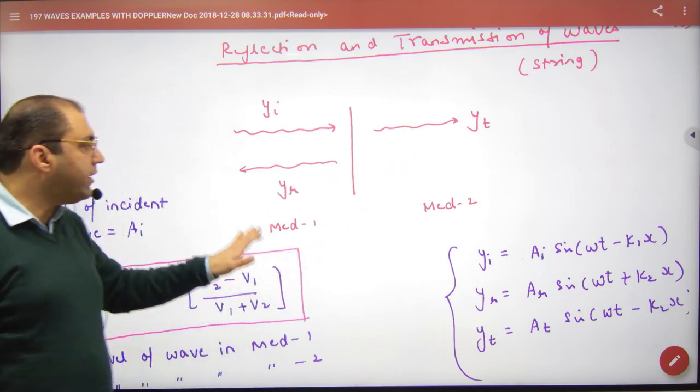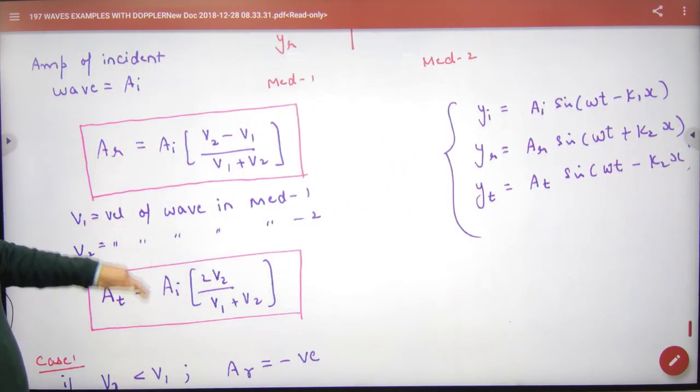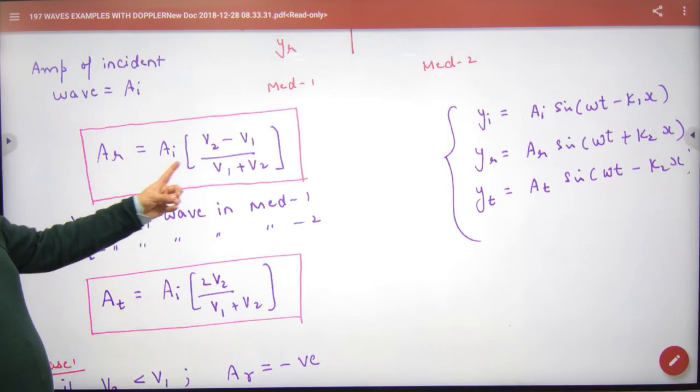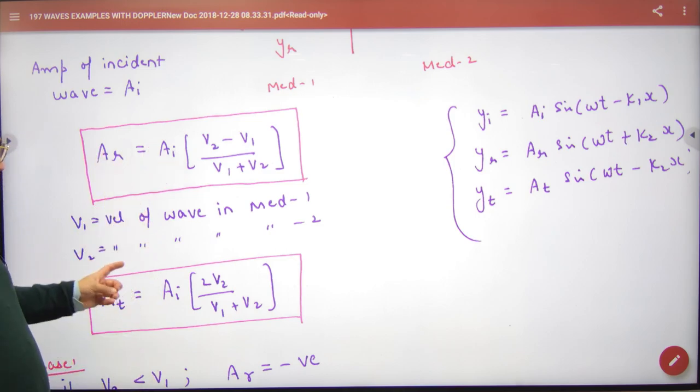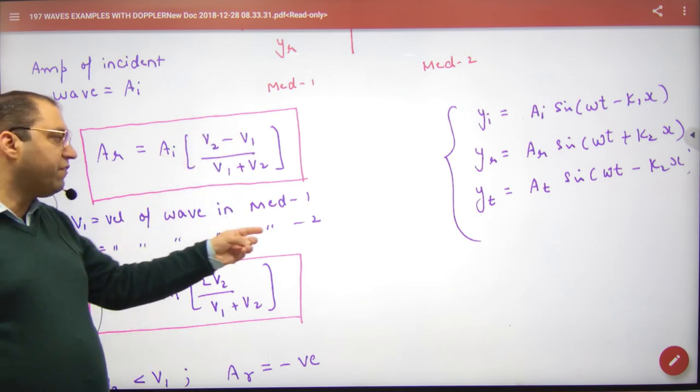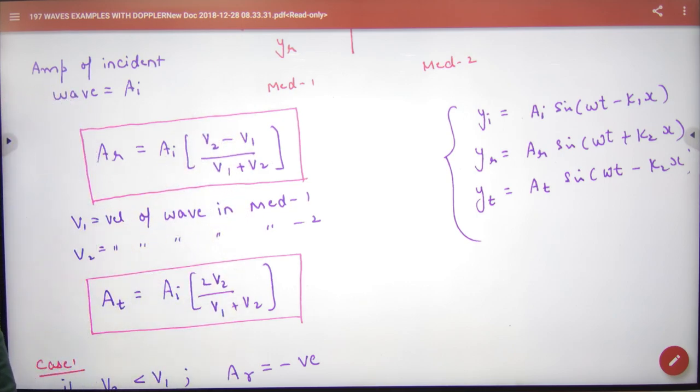Transmitted or reflected amplitude formulas we have to remember. Derivation we are not doing, it is very big. This formula is reflected wave, this formula is transmitted wave. v1 means velocity of wave in medium 1, and v2 means velocity of wave in medium 2.